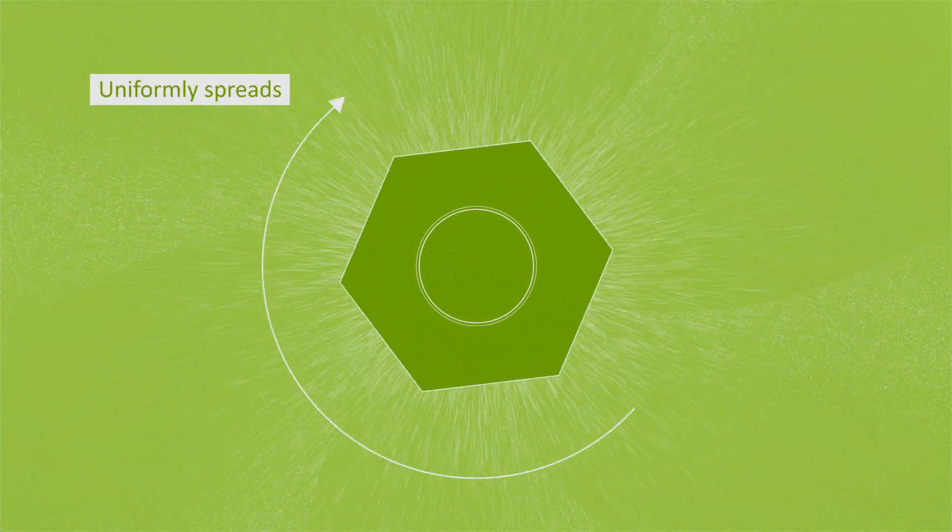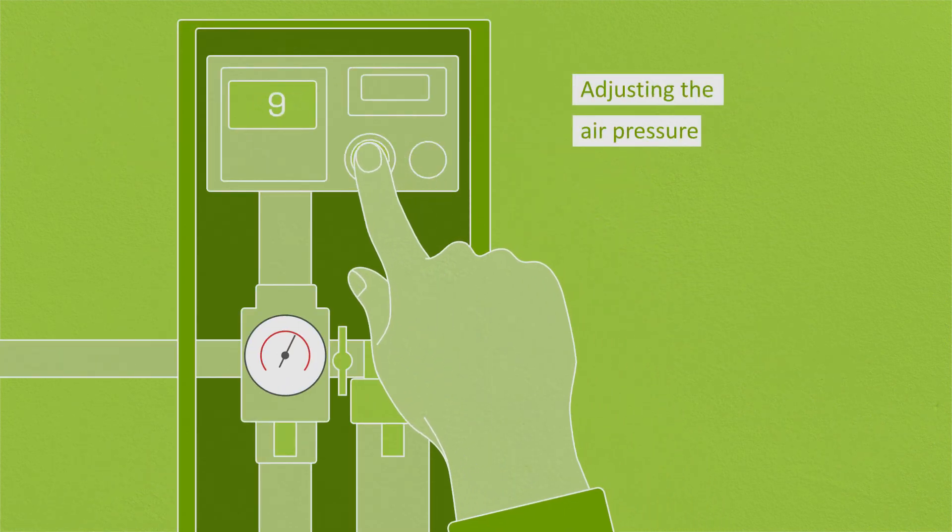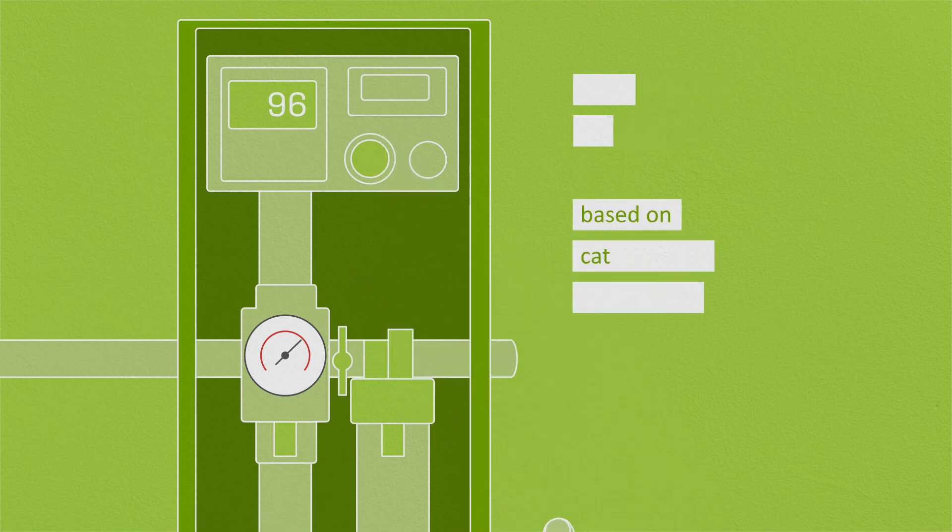The hexagonal disk type rotor uniformly spreads the catalyst over the entire reactor diameter. An operator controls the loading by adjusting the air pressure based on preset parameters dependent primarily on the catalyst type and reactor size.